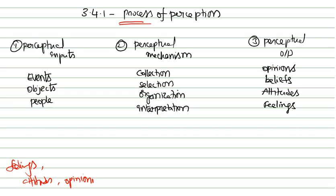Once we take the inputs, the perceptual mechanism consists of three basic components: one — selection of a stimuli; two — organization of a stimuli; three — interpretation of a stimuli.